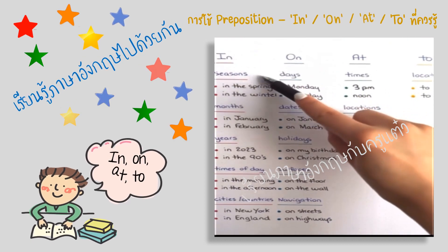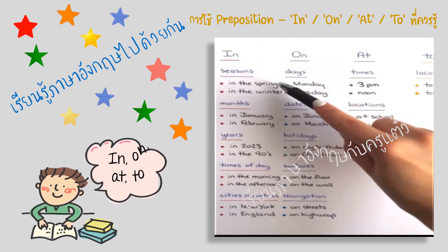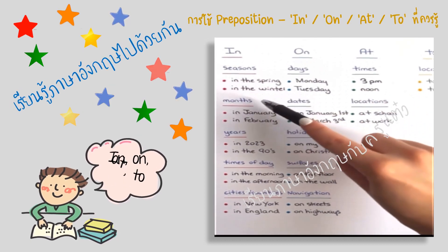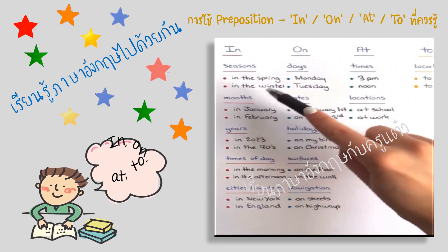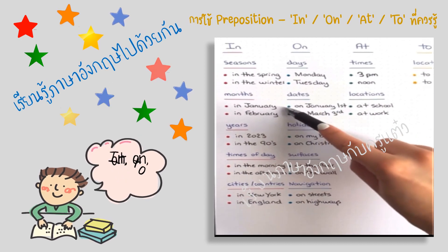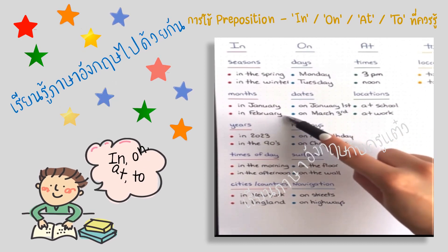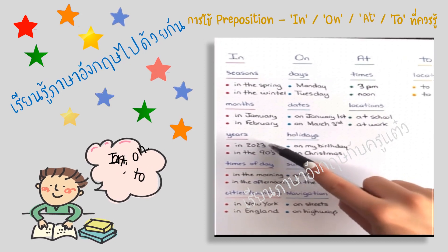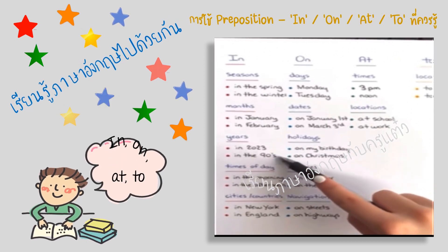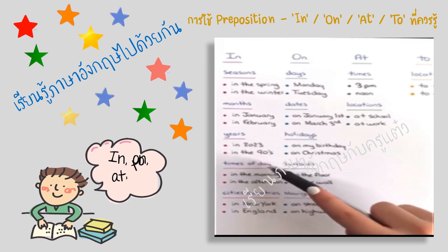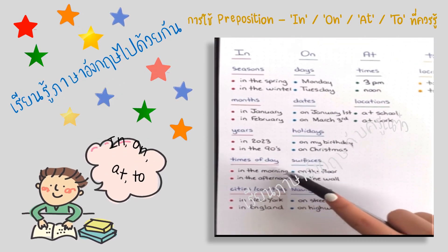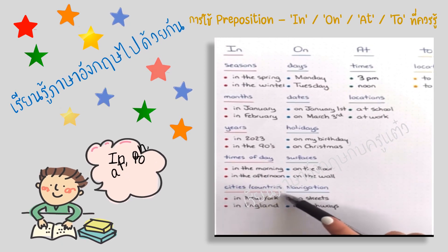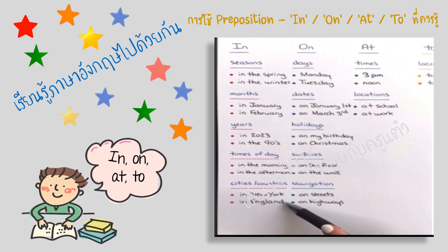The preposition 'in' is used with seasons — in the spring, in the winter; with months — in January, in February; with years — in 2023, in the 90s; times of day — in the morning, in the afternoon; and cities and countries — in New York, in England.